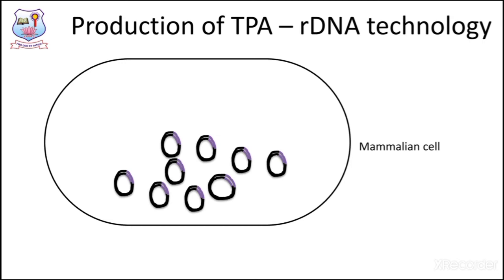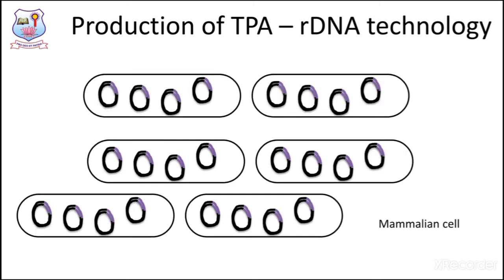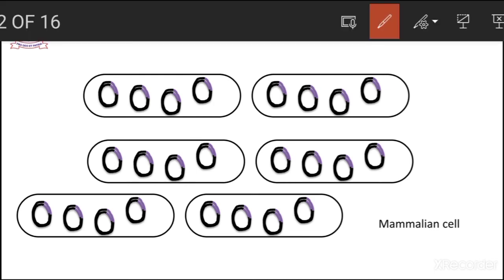Once the number of plasmid copies is sufficient, it is transfected into mammalian cells. Transfection is a process of transferring plasmid DNA into mammalian cells — particularly eukaryotic cells. In the production of tissue plasminogen activator, the recombinant plasmid molecules are transferred into mammalian cells, and you can find the recombinant plasmids within the mammalian cell.